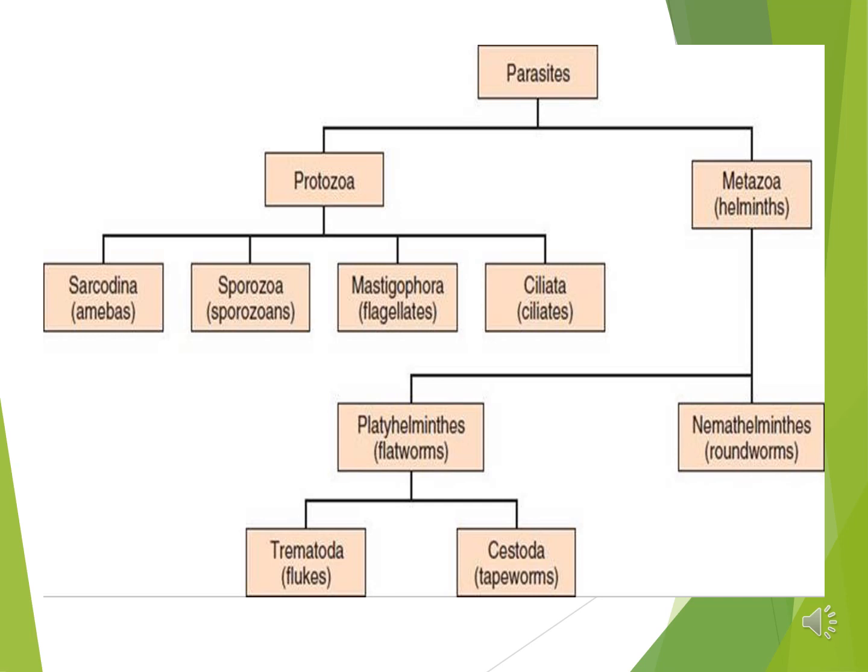Under metazoa helminths, there are Nemathelminths — they are roundworms. And Platyhelminthes — they are flatworms, which include trematodes (flukes) and cestodes (tapeworms).